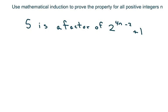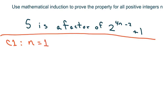The first thing I'm going to do is check for condition 1, or statement 1, conjecture 1, that n equals 1. And when you plug that in you get 2 to the 4 times 1 minus 2 plus 1. And that's going to be 2 squared plus 1, which equals 5. Since 5 divides 5, that means 5 is a factor of 5.